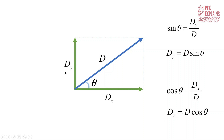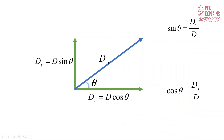So now we can clearly see that DX and DY are the components for vector D. DX equals D cosine theta and DY equals D sine theta. When you have angle theta, the component adjacent to angle theta uses cosine theta, and the component without the angle uses sine theta.